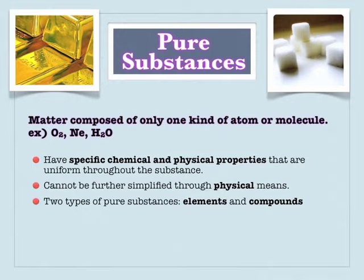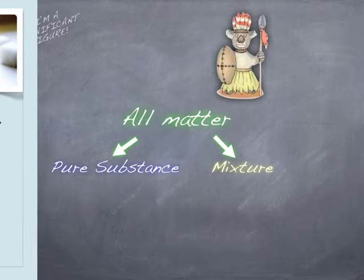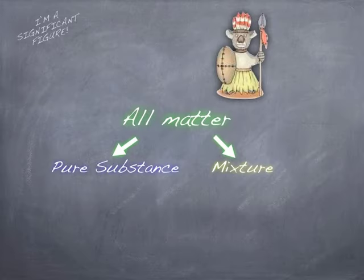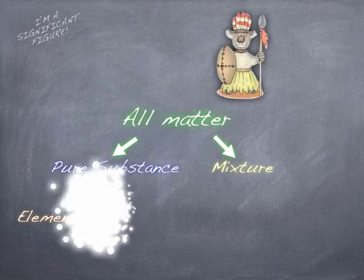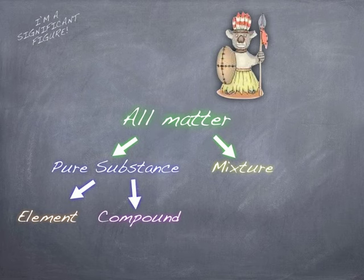The two types of pure substances are elements and compounds — they fit in nicely under the classification tree.